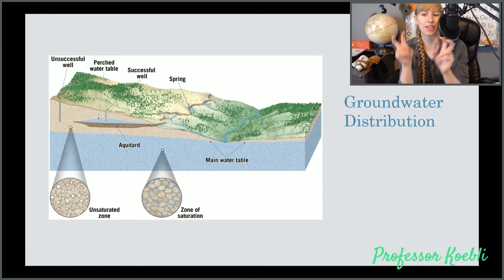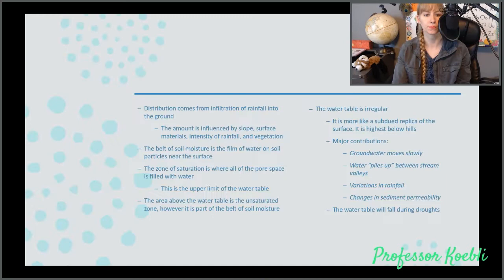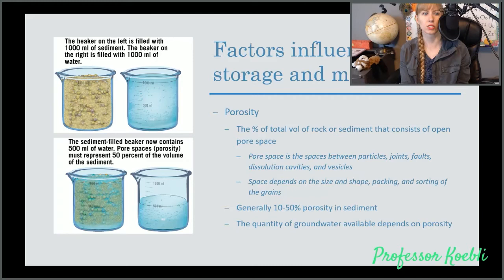Major contributions are groundwater moving slowly. Water piles up between stream valleys, where it meets the stream valley itself. Variations in rainfall can change it and changes in sediment permeability. The water table will fall during droughts, just like it will rise during periods of increased rainfall. This way you guys have it. You'll be able to see this also in the PDF.